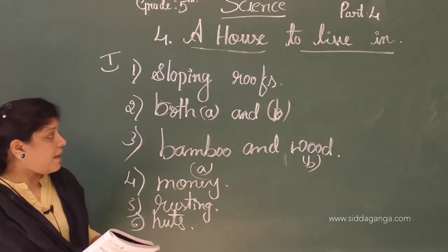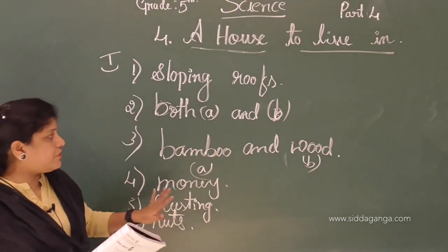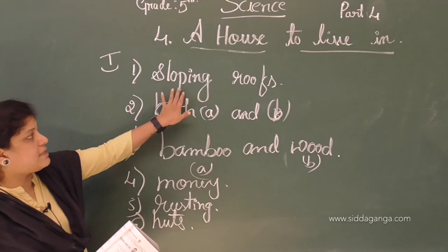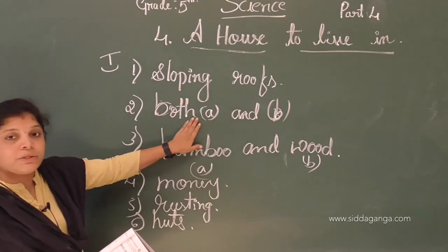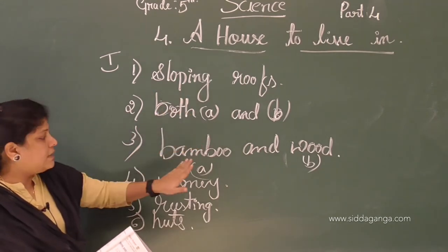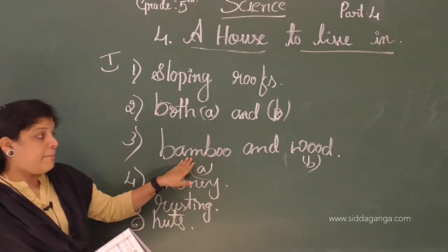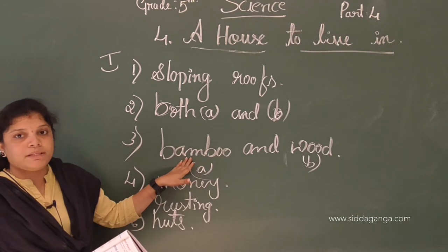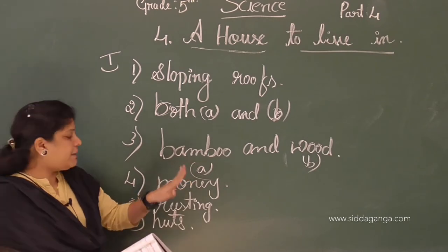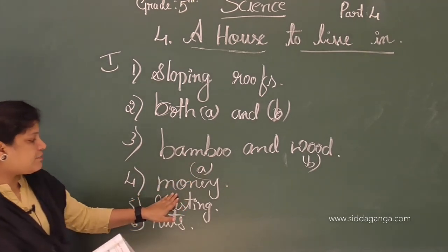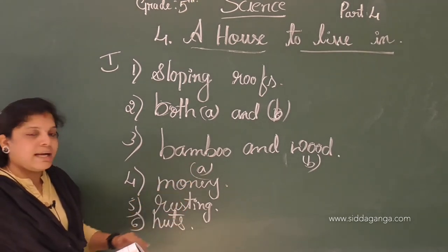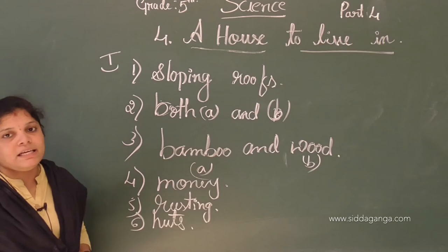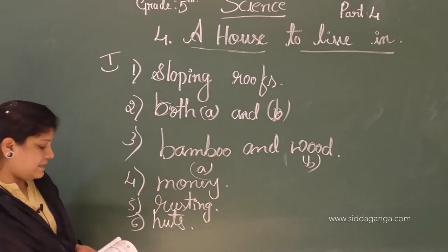To summarize the first main: first answer is sloping roofs; second is both A and B; third is bamboo and wood, which is both A and B; fourth is money; fifth is rusting; and last one is huts.